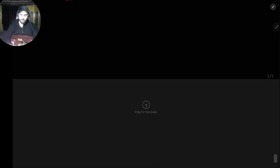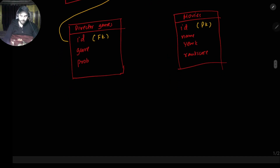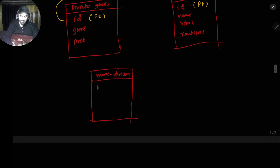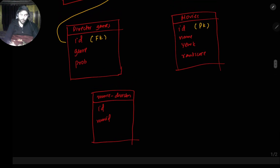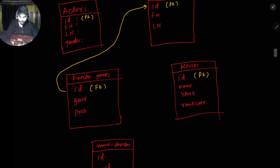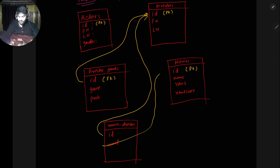Those are four tables; then we have three more. We have movie_directors — only two attributes: director_id and movie_id — basically which movie was made by which director. Both of these are foreign keys: director_id is a foreign key to the directors table, and movie_id is a foreign key to the movies table. I'm making arrows to show which table is a foreign key of another.